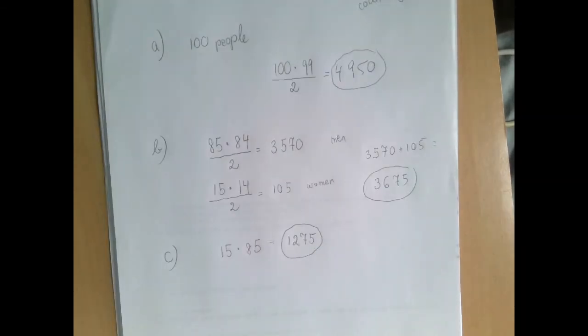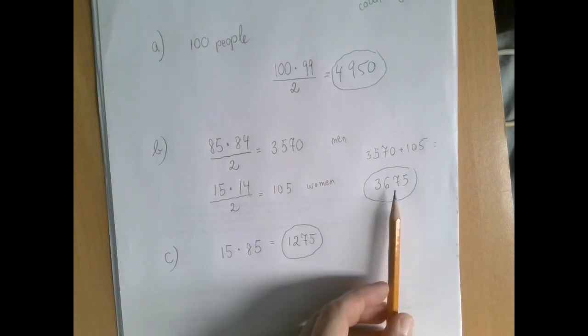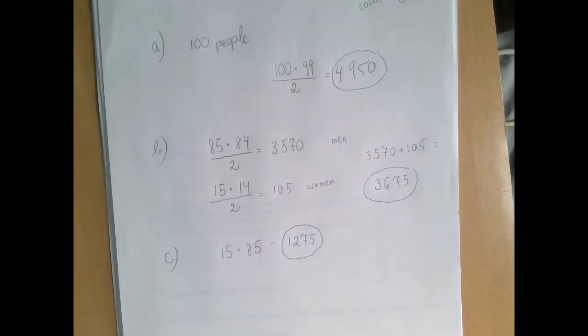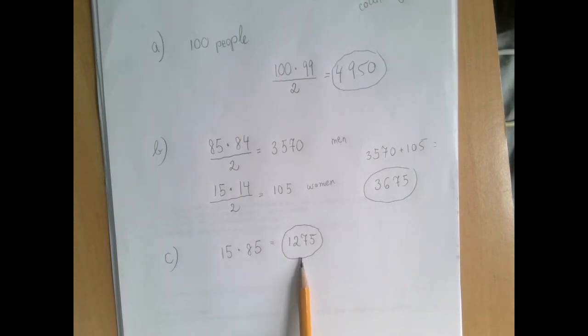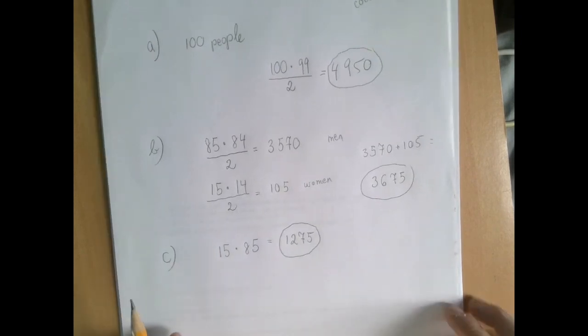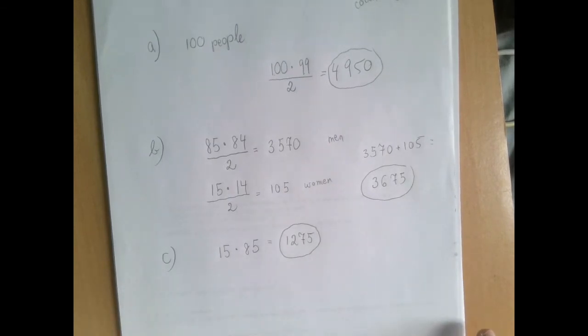And just a side thought, if you think about it, if we add these two numbers, we should get this number. This is when men shake hands with men, and women with women. And this is the mixed handshakes. If we add them up, we should be counting all the handshakes. And indeed, if we add 3675 and 1275, we will get this 4950. So that's a good way to check. Thank you for watching.